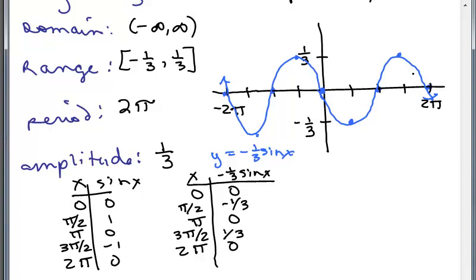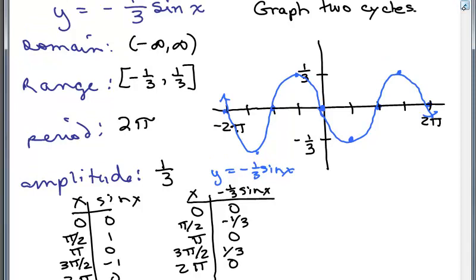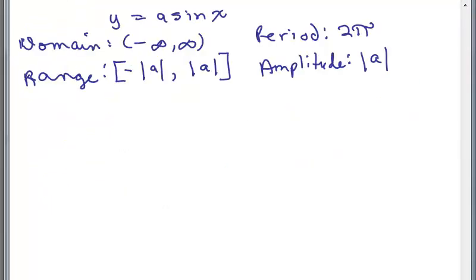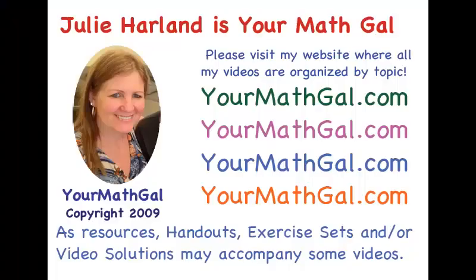So to summarize, we have now graphed Y equals A sine of X. If we were going to just use the letter A, we would have to write it like this to express what the domain, range, period, and amplitude are. This is YourMathGal, Julie Harland. Please visit my website at yourmathgal.com where all of my videos are organized by topic.